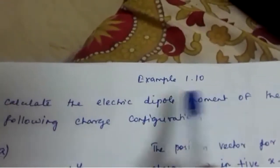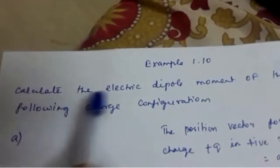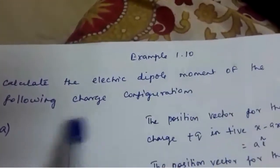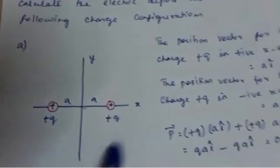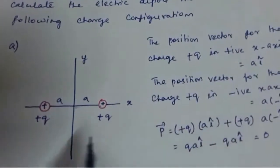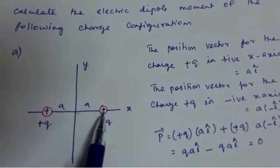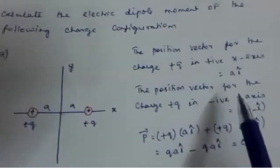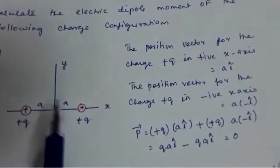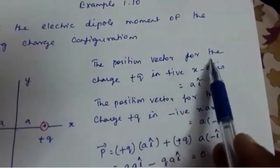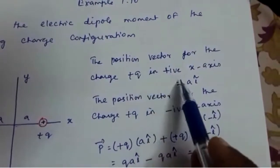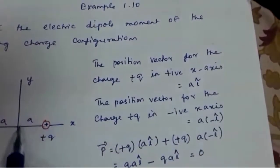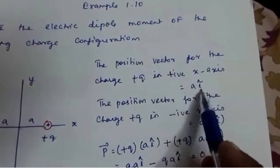Example 1.10: Calculate the electric dipole moment of the following charge configuration. In the diagram, you have one charge in the positive x-axis and another charge in the negative x-axis. The position vector for the charge +q in the positive x-axis is a into î-vector.